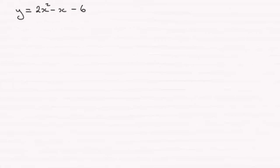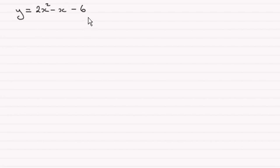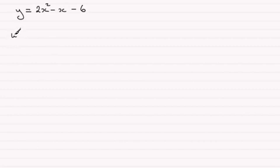Hi there. For this part we're asked to sketch the curve y equals 2x squared minus x minus 6 and state the coordinates of where it crosses the x and y axis. For where it crosses the y axis, that's very easy. All we need to think of is when x equals 0. When x equals 0 you're just left with y equaling minus 6.